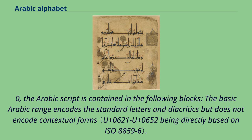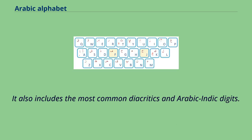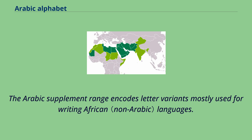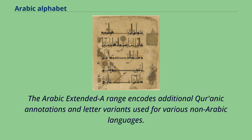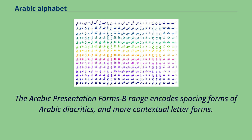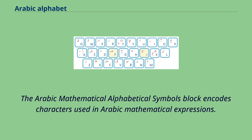The basic Arabic range encodes the standard letters and diacritics but does not encode contextual forms. It also includes the most common diacritics and Arabic-Indic digits. U+06D6 to U+06ED encode Quranic annotation signs such as end of ayah and start of rub el-hizb. The Arabic supplement range encodes letter variants mostly used for writing African languages. The Arabic extended-A range encodes additional Quranic annotations and letter variants used for various non-Arabic languages. The Arabic presentation forms-A range encodes contextual forms and ligatures needed for Persian, Urdu, Sindhi, and Central Asian languages. The Arabic presentation forms-B range encodes spacing forms of Arabic diacritics and more contextual letter forms. The Arabic mathematical alphabetical symbols block encodes characters used in Arabic mathematical expressions.